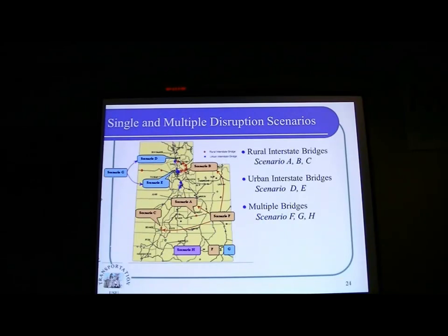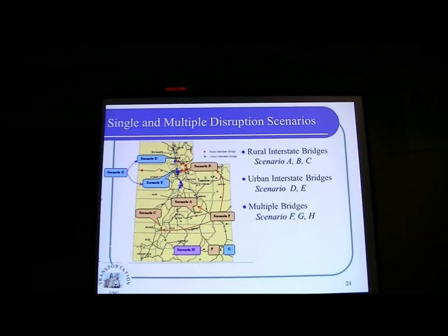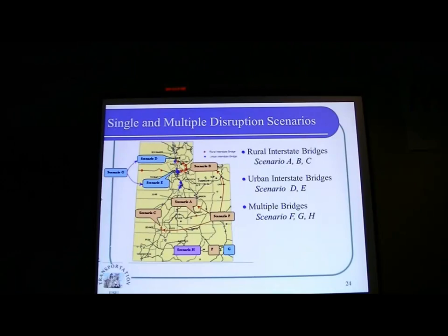A lot of the time, the truck needs to stop or may need to travel a very long distance as a detour. But in the urban area, with the interstate bridge, the problem is a little different — you can find alternative routes. However, because you have a lot of demand in the urban area, the impact will be very different. And lastly, we combine all the bridges across different scenarios to see what happens if we disrupt many bridges at the same time.